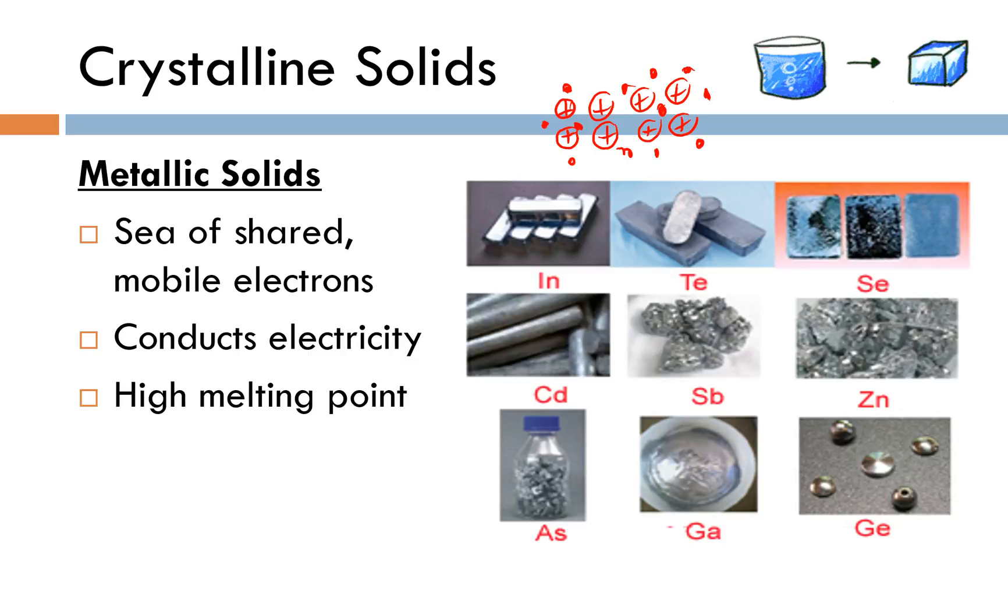Metals also have very high melting points for the most part. You can find some exceptions but across the boards when we think about metallic substances we're looking at very very high melting points.